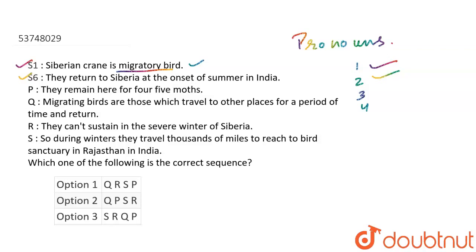When are they coming back? That is our clue — the migratory birds are called back. When are they coming back to Siberia? At the onset of summer in India — when summer comes to India. That means summer's beginning; the word 'onset' means beginning.